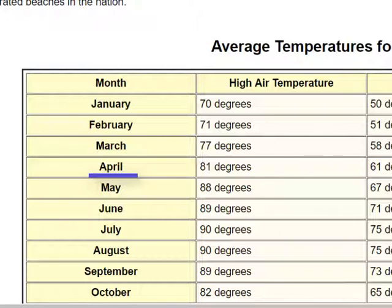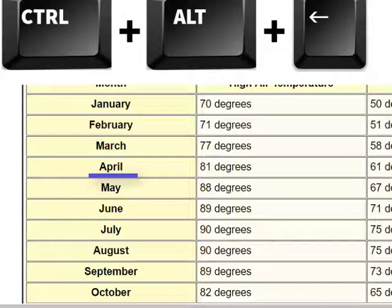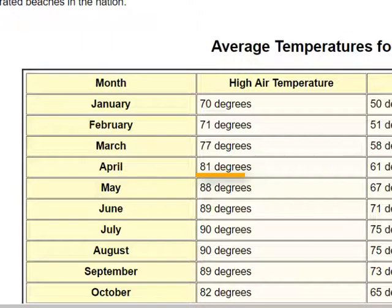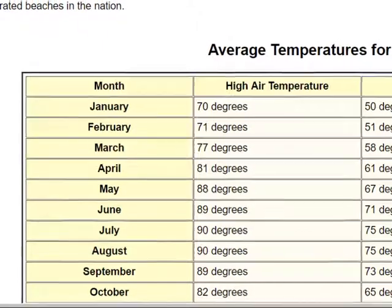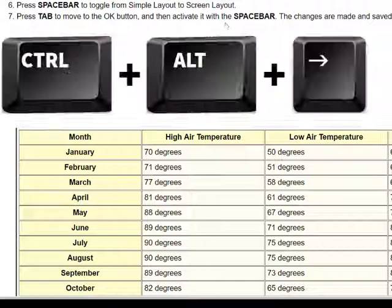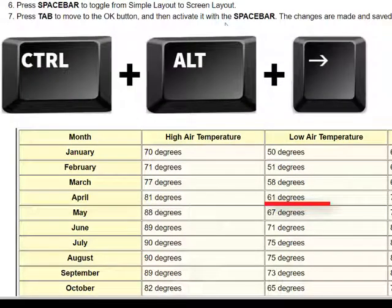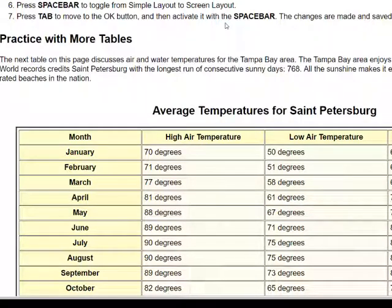Since I'm at April, if I press CTRL+ALT+right arrow, it reads 'High air temperature, 81 degrees, Column 2.' It reads the heading for the column because one is programmed into this table, and it also tells you what column you're in. Pressing right arrow again with CTRL and ALT gives 'Low air temperature, 61 degrees, Column 3.'